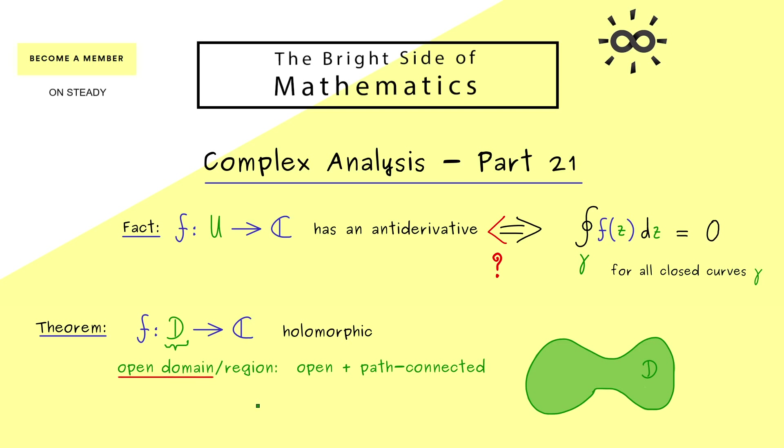Still, I should explain to you what the term path-connected means for a subset in the complex plane. However, it's not so complicated, the name essentially already explains it. It simply means any two points in the subset can be connected by a path.